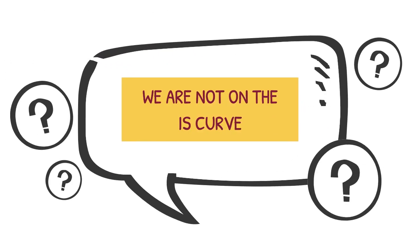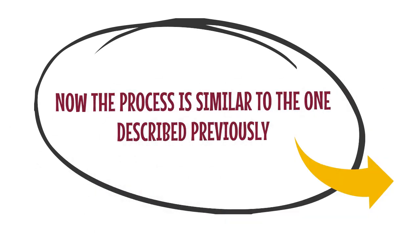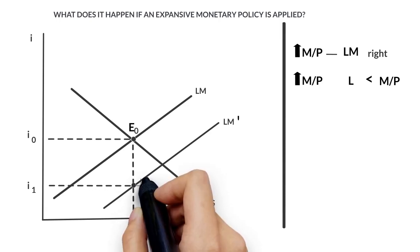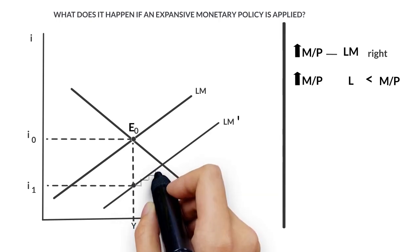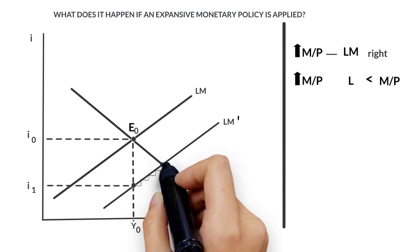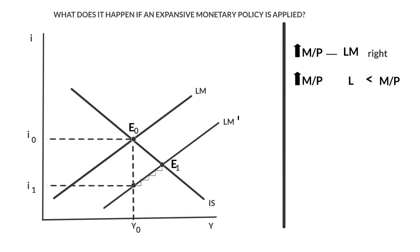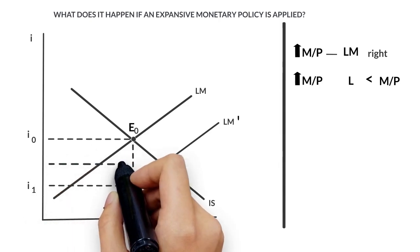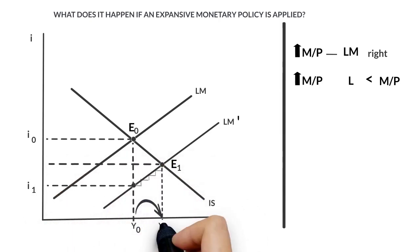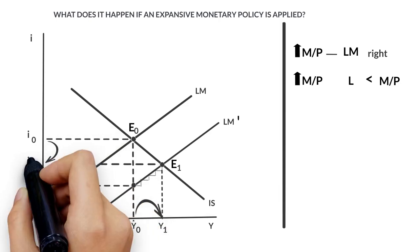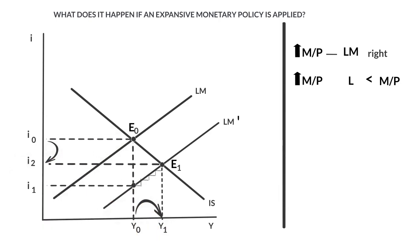But for this new point, the goods market is not in equilibrium because we are not on the IS curve. Now the process is similar to the one described previously. The income will start to increase and the money market will not be in equilibrium, and the interest rate will raise to reach the equilibrium. This process will continue until we reach a new point where the IS and LM curves cross each other, thus reaching a new equilibrium point E1. The final result is that the income level has increased to level Y1, and the interest rate has decreased till I2.